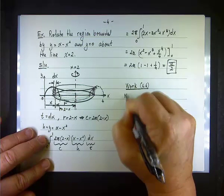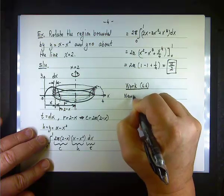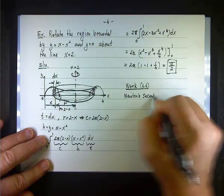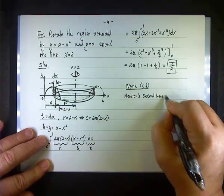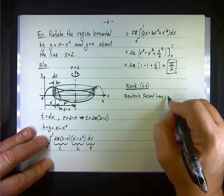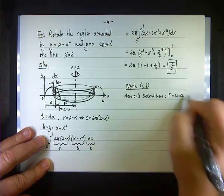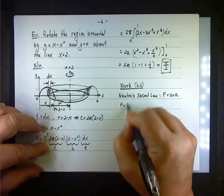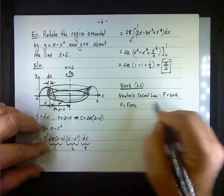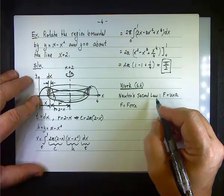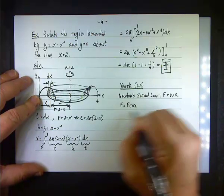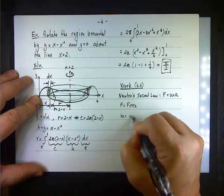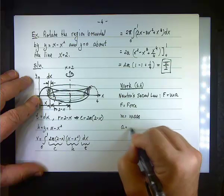Most of you are familiar with Newton's second law, namely F equals MA, where F is a force, M is a mass, and A is the acceleration.